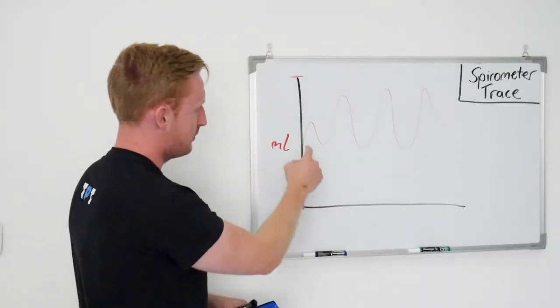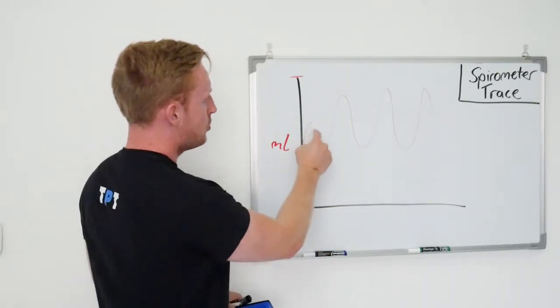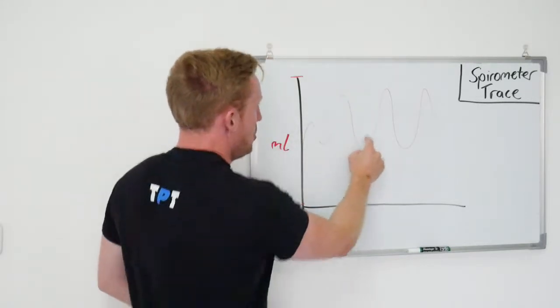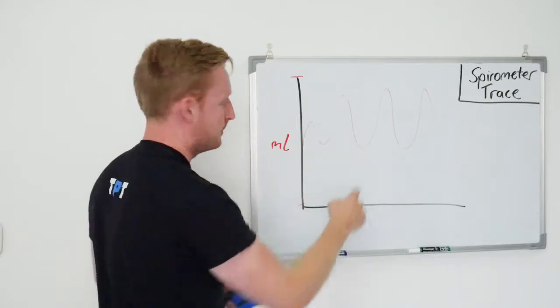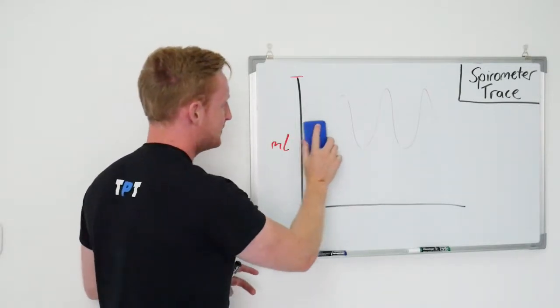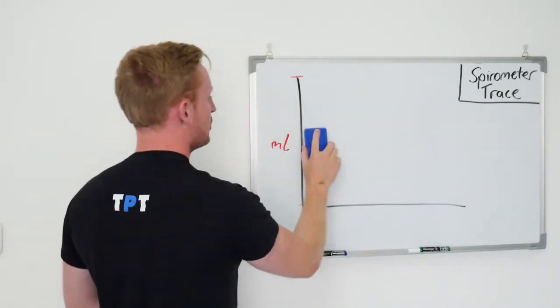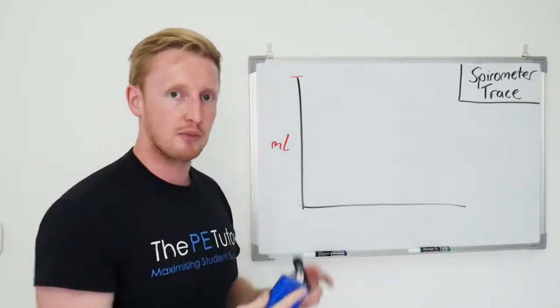So for this one, for example, this would be a normal breath. Okay, maximal inhalation, but not maximal exhalation. So different breathing patterns and different breathing volumes correspond to different spirometer traces.